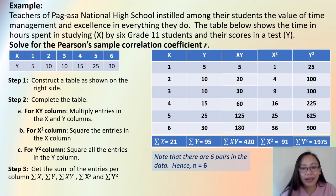Note that there are 6 pairs in the data. You have here the first pair, the second pair, the third pair, fourth pair, five, and six pairs. So, you have N is equal to 6.